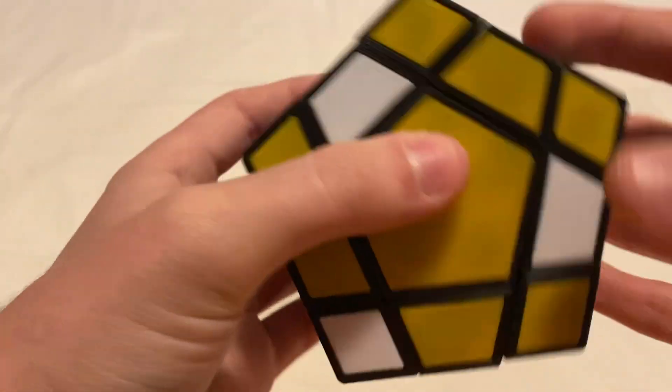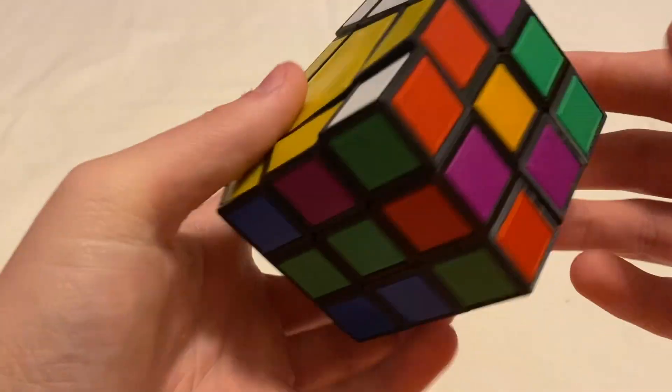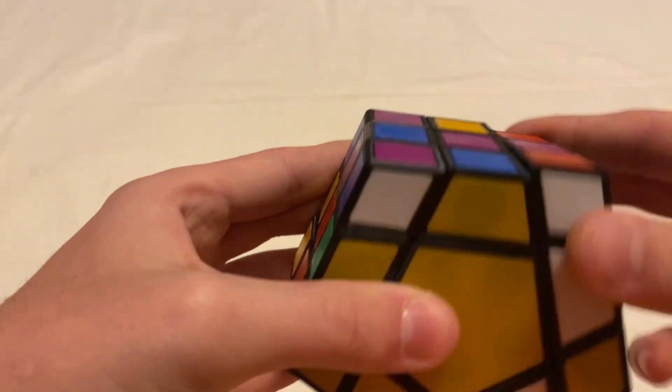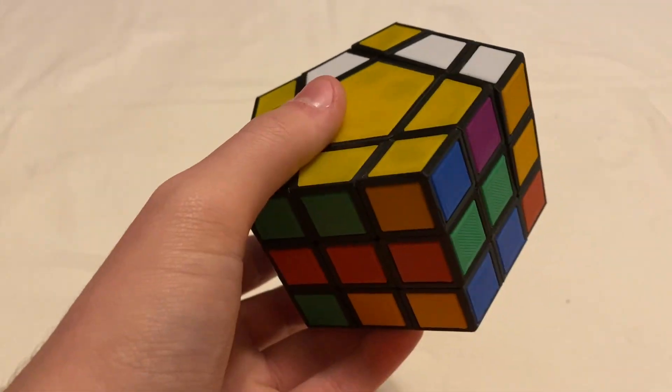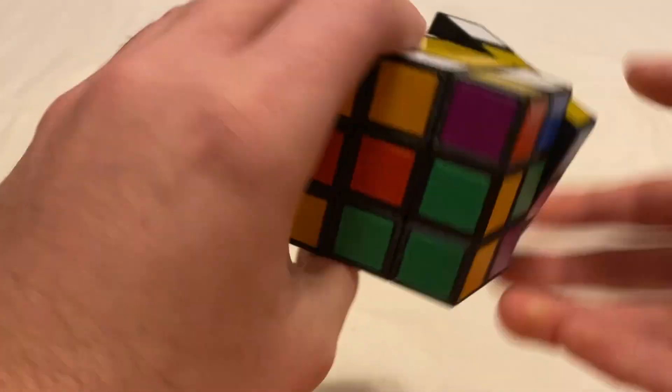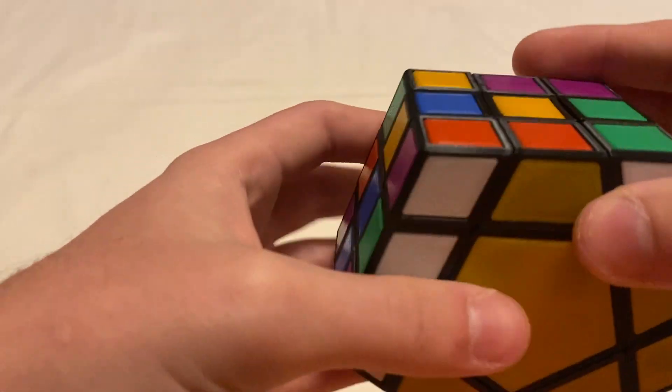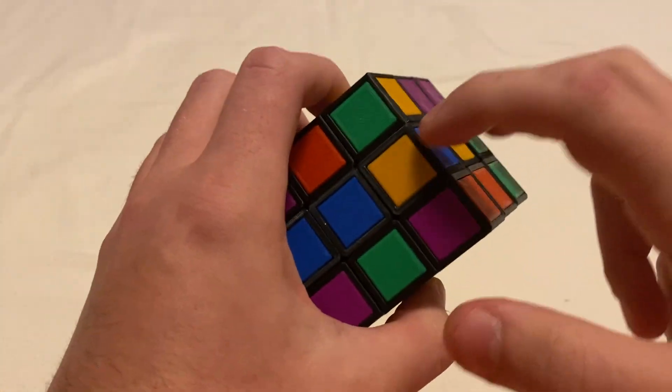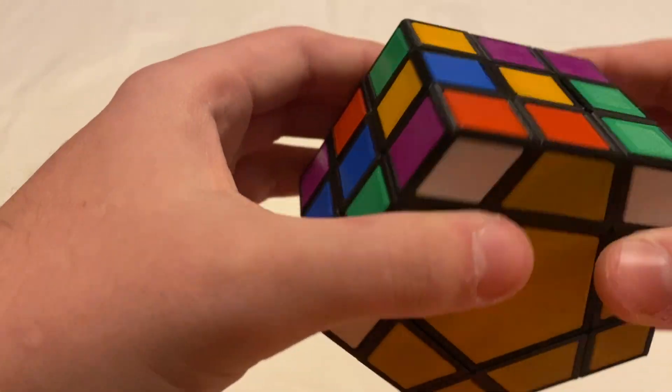And I'm first going to insert that one, and then that one, and then I'm actually going to kind of cycle that one around to flip it. And it looks like I need to flip these two. So, I came up with an algorithm a while ago that flips them.